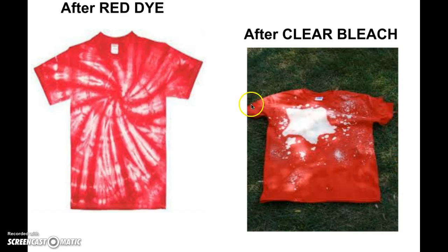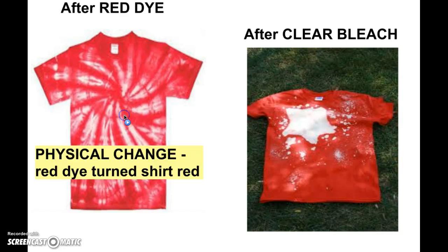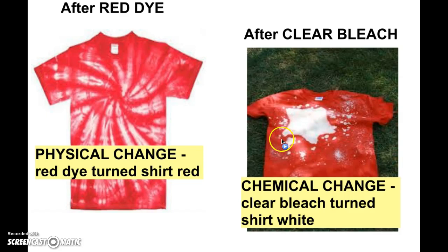A lot of people might wonder which one of these is a physical change and which is a chemical change. Let's say we put red dye on a t-shirt — this would be a physical change, like we said in the warm-up, because it's red dye and it just turned the shirt red. We still have a t-shirt and we still have red dye. But take a look at this example: if you have a red t-shirt and you put bleach on it, yes it's a color change, but this would be chemical because the bleach itself is clear and it turned the shirt white — not because I had a white marker. I had something clear, so I got a color change that I did not have before.